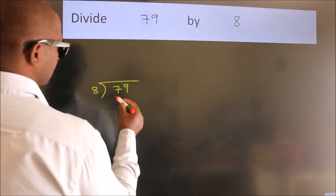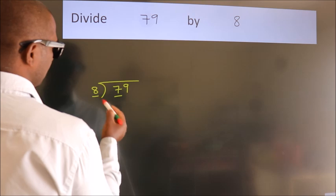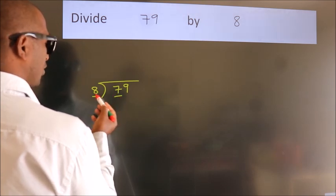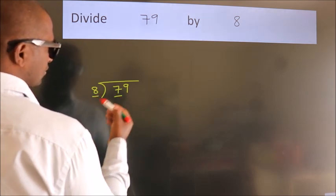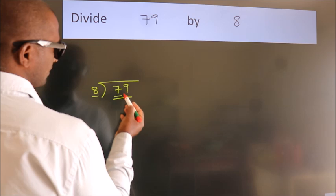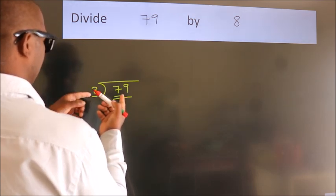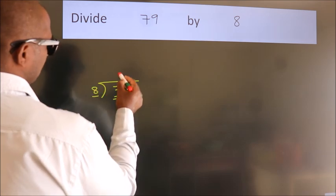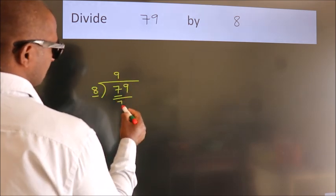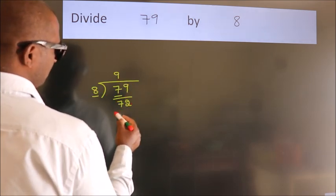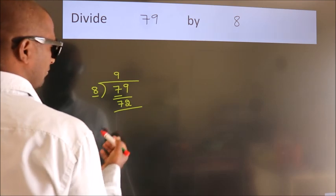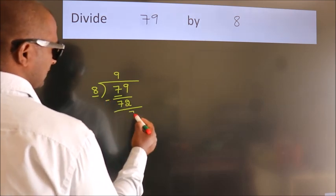Next, here we have 7, here 8. 7 is smaller than 8, so we should take two numbers: 79. A number close to 79 in the 8 table is 8 nines, 72. Now we subtract and get 7.